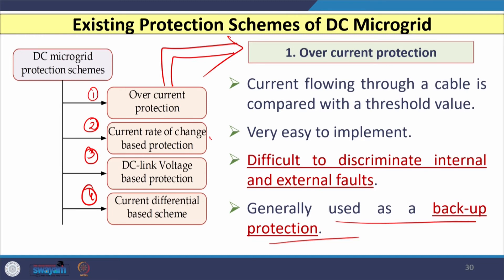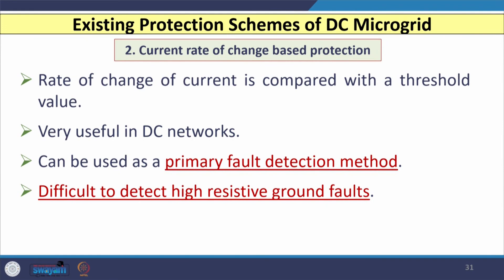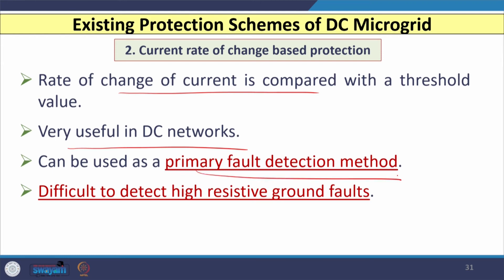The second scheme is the current rate-of-change (di/dt) based scheme, where the rate of change of current is compared with a threshold value. This scheme is very useful for DC networks and can be used as a primary fault detection method. However, it is very difficult to detect high-resistance ground faults using this approach.